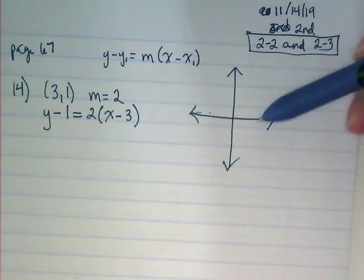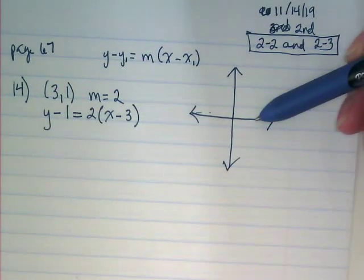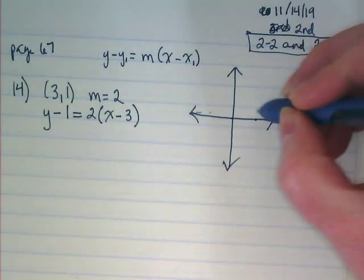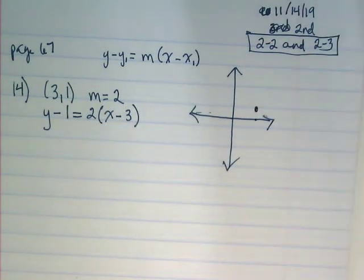Here's 0, so my 3 would probably be about here, yes? And my 1 would probably be about here. That is the point, 3 comma 1 on my sketched graph.